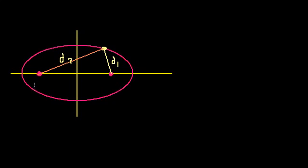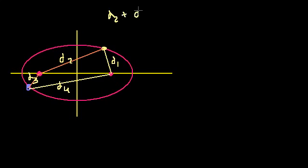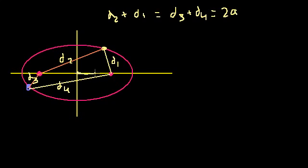So if I take a random point along the ellipse — let's say this point right here — and sum this distance to that distance, let's call these d3 and d4, the sums of these distances to the foci along the ellipse are going to be a constant. So d1 plus d2 is equal to d3 plus d4. We learned in the last video that this quantity is actually going to be equal to 2a, where a is the semi-major radius. If this is the formula for the ellipse, this is where the a comes from.